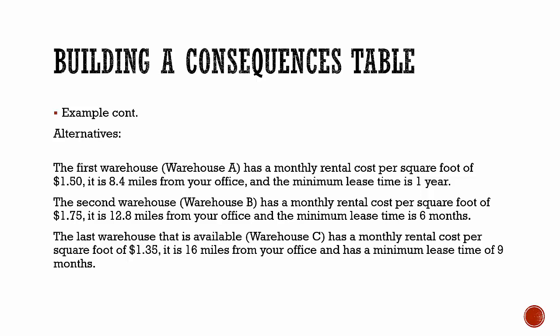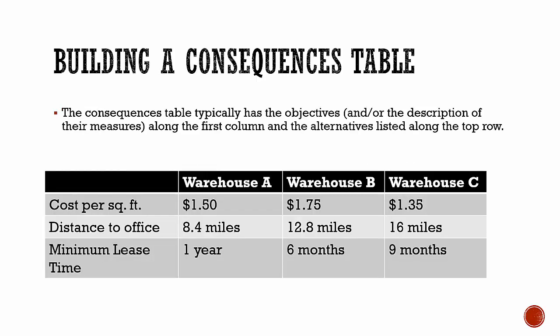So we have our objectives and the different alternatives we can look at. We create our consequences table like this. In the first column are each of our objectives and how we measure them.